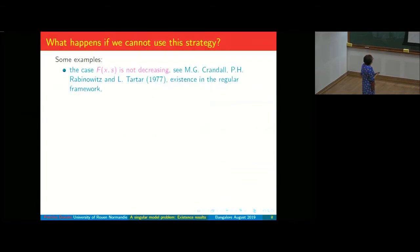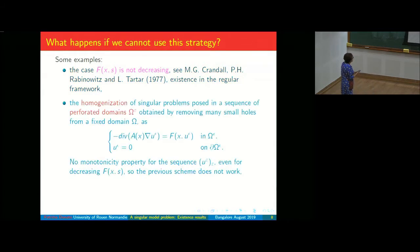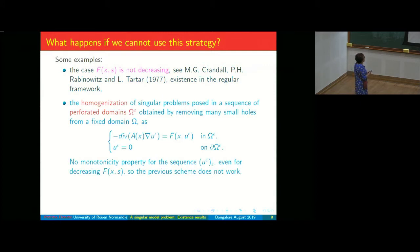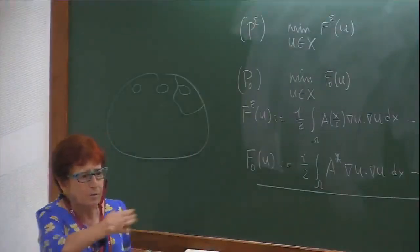For instance, if F is not decreasing — this is the model case F / U^γ, but you can take a more general function F(x,s) going to infinity when the variable goes to zero, as in the case studied by Crandall, Rabinowitz and Tartar. Also, if you study homogenization in a perforated domain, you cannot play with the small ω' because the holes are varying.